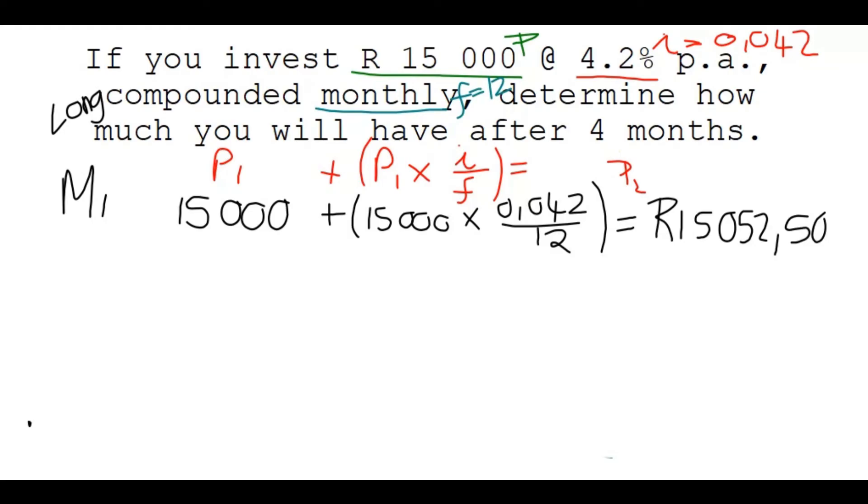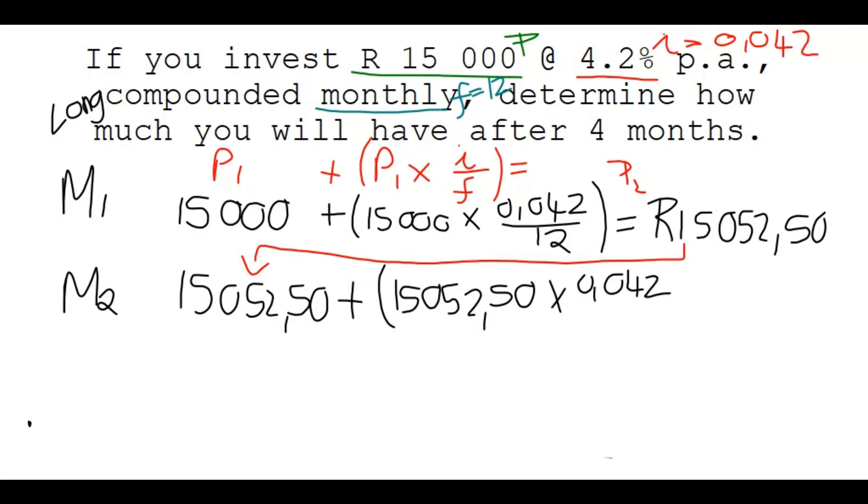Great. Now you're going to use this new P2, or this new amount, and you're going to start with it in the second month. So in the second month, you start with 15,052 Rand and 50 cents. And now there's interest on this amount, because it's compound interest. So you start with that again, because you want to find out how much interest will you get if the interest rate is 4.2%. So you put in 0.042 over the frequency, that's 12. And then you end off after the second month with a little bit more, you have now 15,105 and 18 cents.